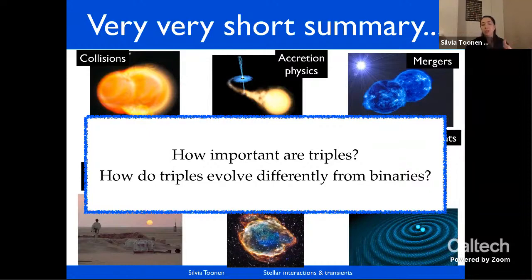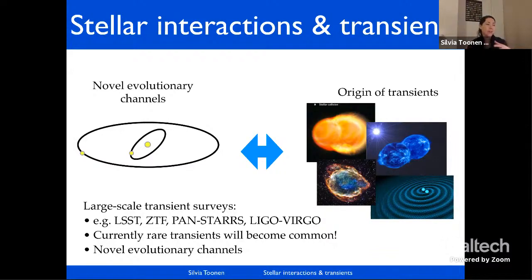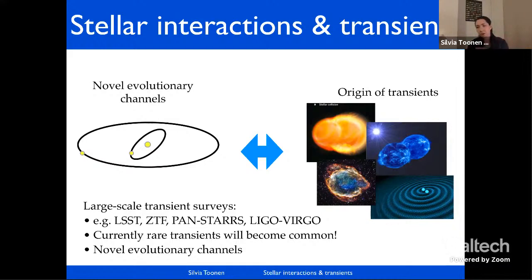We're in an amazing era where the numbers of observations of transient sources are going through the roof. The number of supernovae that ZTF is observing every night is incredible, and with LSST or the Vera Rubin Observatory this will go up by three orders of magnitude. One of the big questions for me is what the origins are of many of these transients.